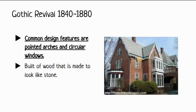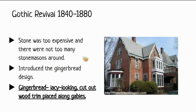Gothic Revival homes were often built of wood, but the wood would be textured and made to look like stone. The reason behind that is because stone was too expensive, and the people who had the skills to do the stonework — we call them stone masons — there weren't many around; it was kind of a lost art. So there weren't a ton of people to do it, and it was really expensive both to hire them and to pay for the stone itself.